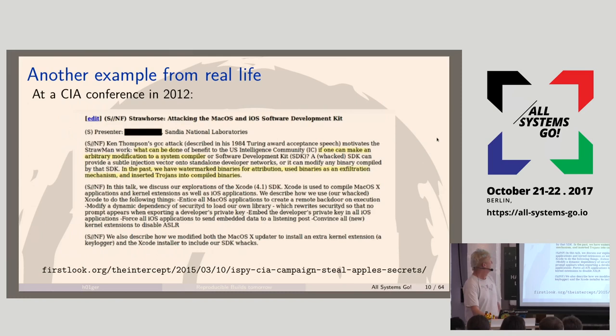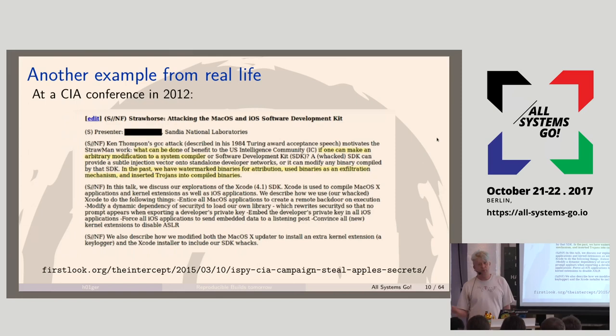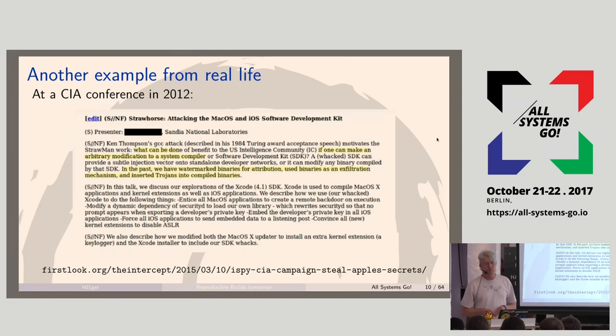There's also a white paper from the CIA conference where the CIA described how they would theoretically backdoor an SDK to compromise code built with it. And then there was Xcode Ghost — discovered in 2015 — where somebody backdoored the SDK for iOS and put it on servers faster to reach from China. Many Chinese developers downloaded that trojanized SDK, and then there were 20 to 30 million compromised applications in the wild. And that was with good source code.